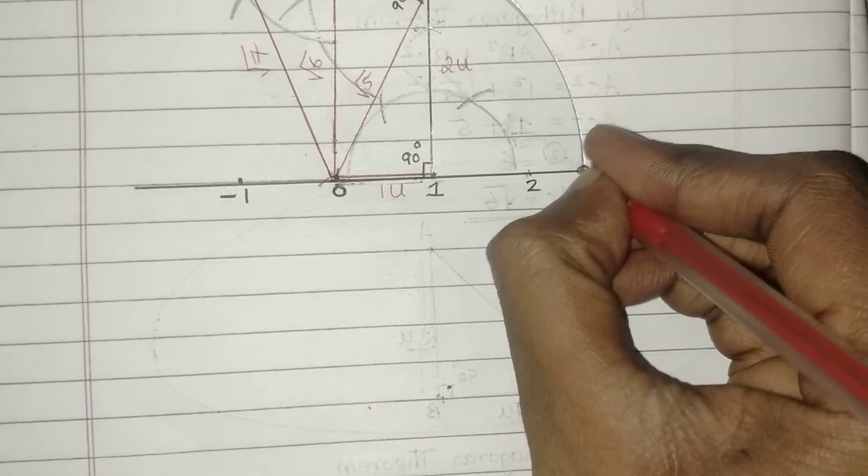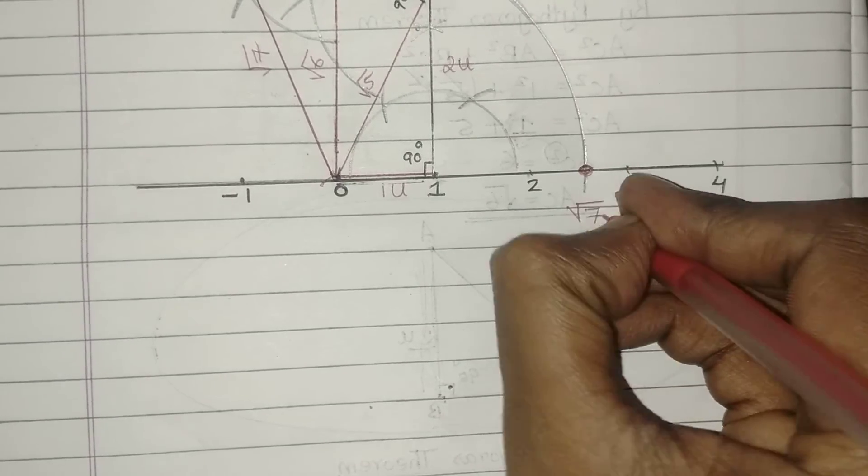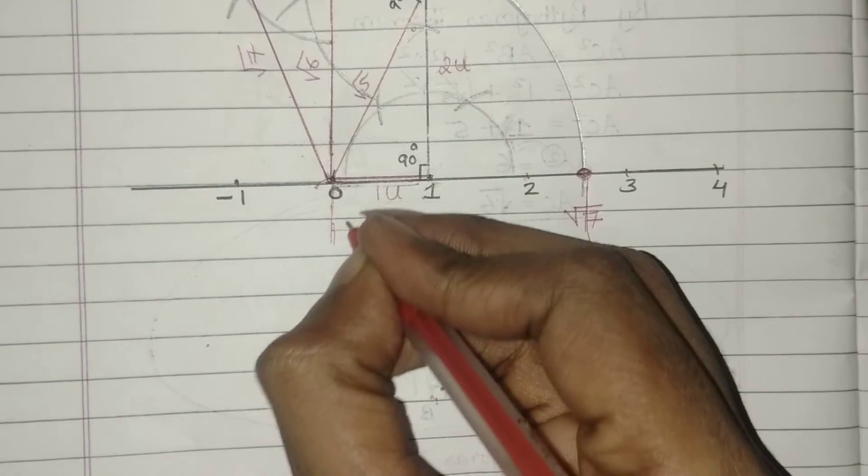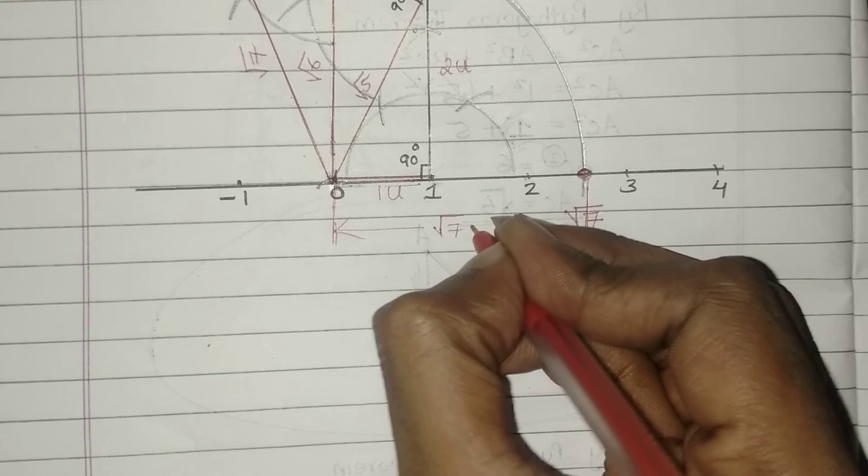So this is the point where root 7 lies. Or I can say from 0 till this point, the total measure is root 7 units.